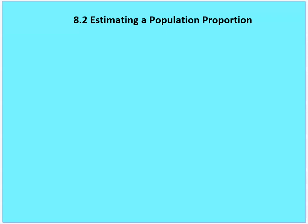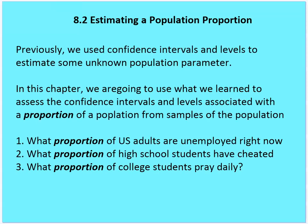Hello and welcome to the second part of our discussion on estimating with confidence. We're going to talk about estimating a population proportion. Before we get into the objectives, I want to review a couple things with you. I'll give you an overall look of where we're going and then we'll talk about the objectives. So previously we used confidence intervals and levels to estimate some unknown population parameter.